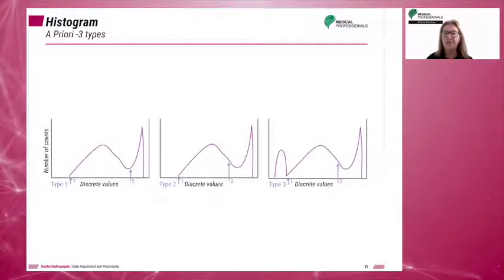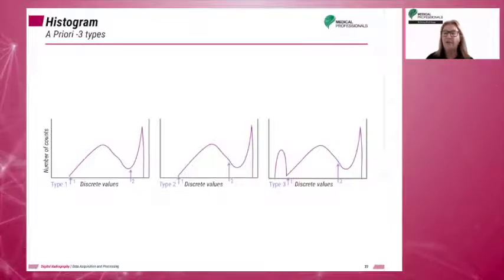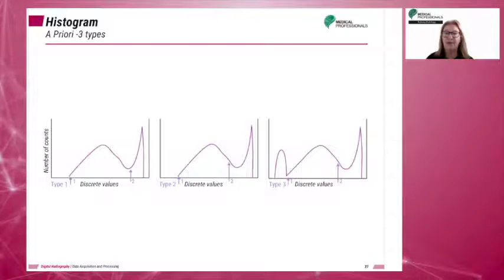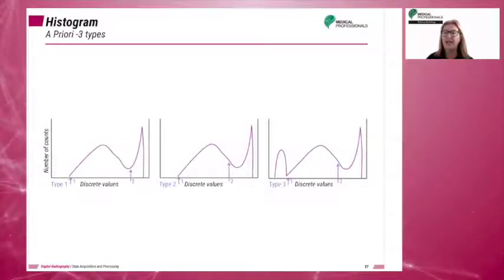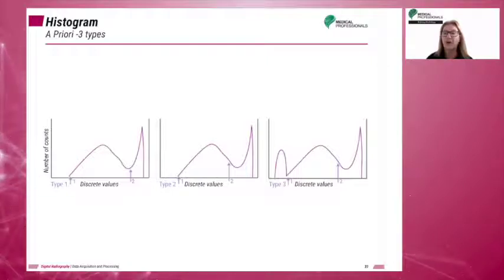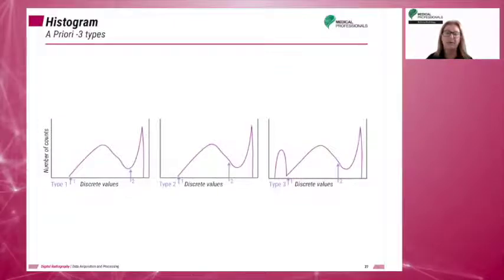In Type 2, the VOI is displayed from the maximum attenuator up through the maximum value of the main histogram. In this case, the skin line does not indicate the maximum value. Type 2 is used for the trunk of the body, the spine, the skull, and the pelvis.